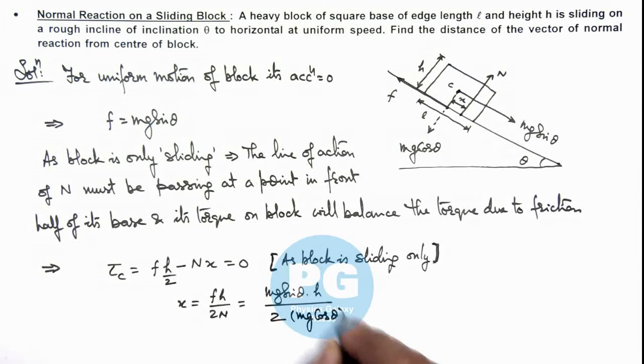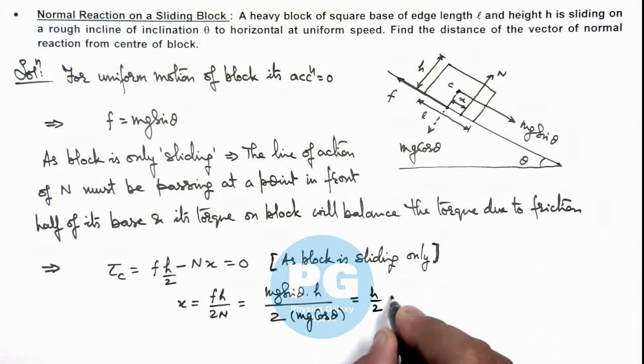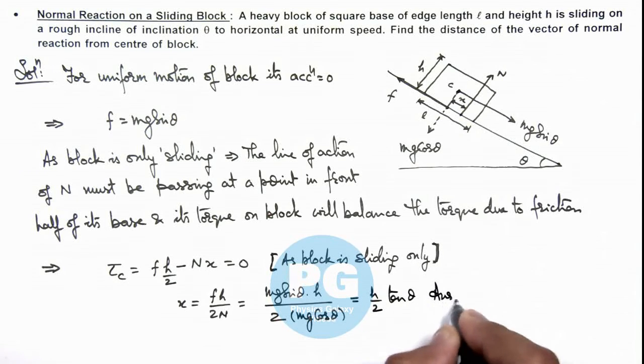Because in the direction normal to the plane it is in equilibrium. And simplifying this is giving us h by 2 tan theta. That is the result of this problem.